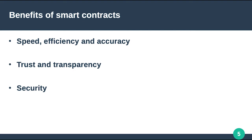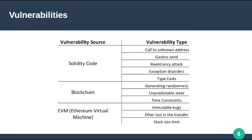Security is another benefit — blockchain transaction records are encrypted, making them very hard to hack. However, because each record is connected to the previous and subsequent record on the distributed ledger, hackers would have to alter the entire chain to change a single record. In large networks such as Bitcoin or Ethereum this seems impossible. However, this last point is not entirely accurate, which is why this research exists — there are multiple well-known security vulnerabilities in the Ethereum smart contracts ecosystem.